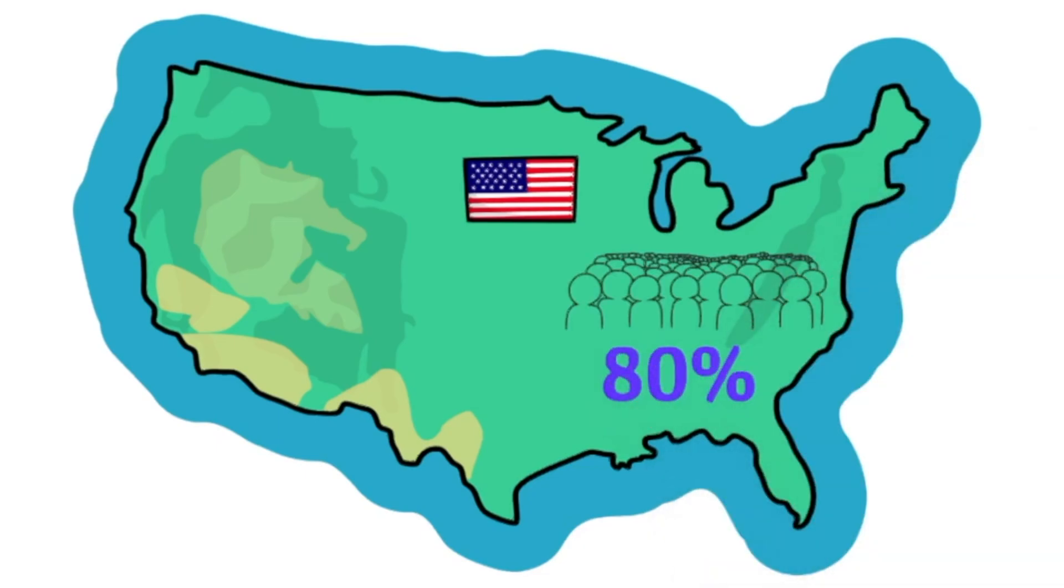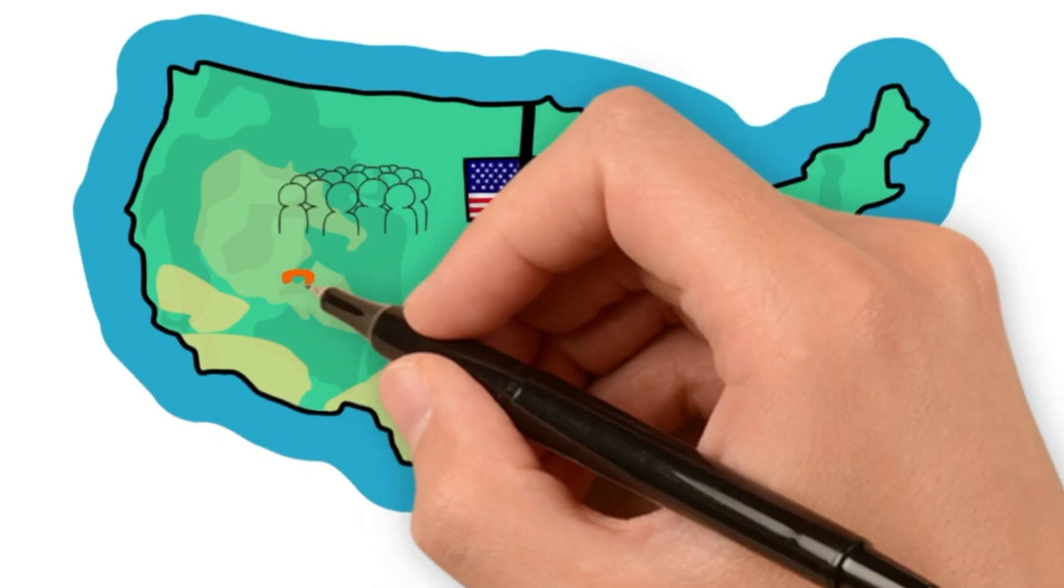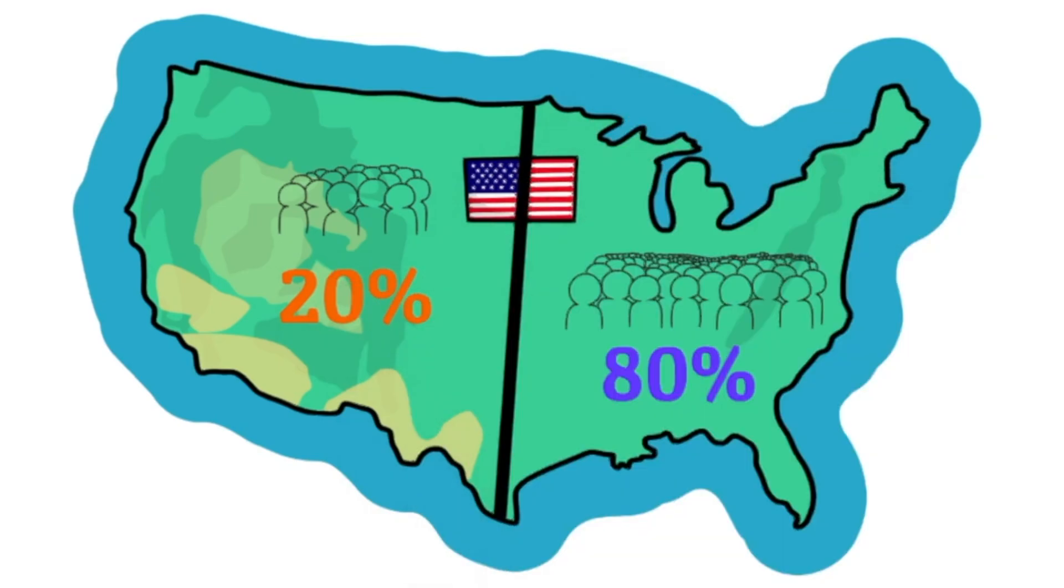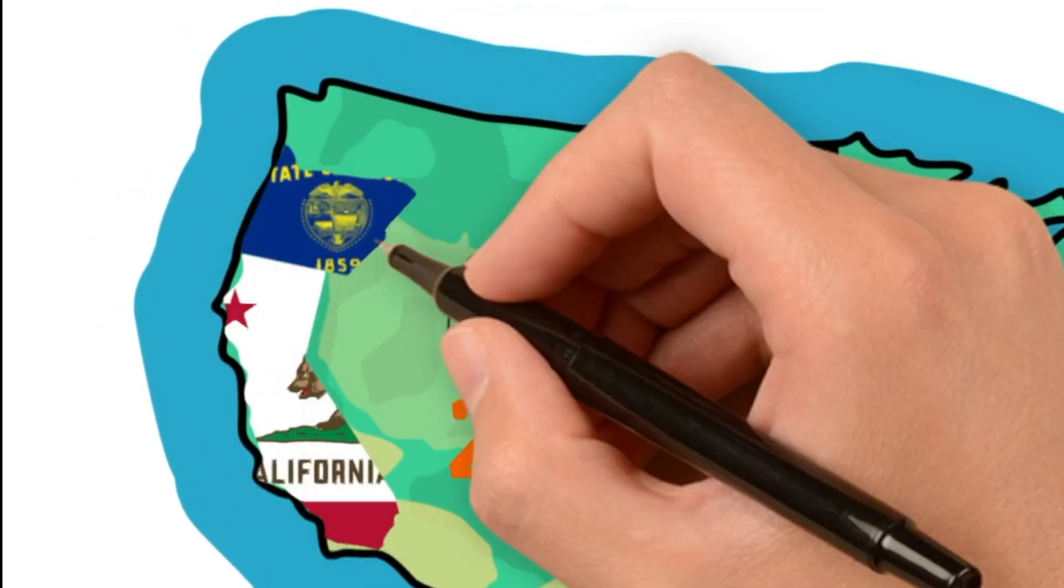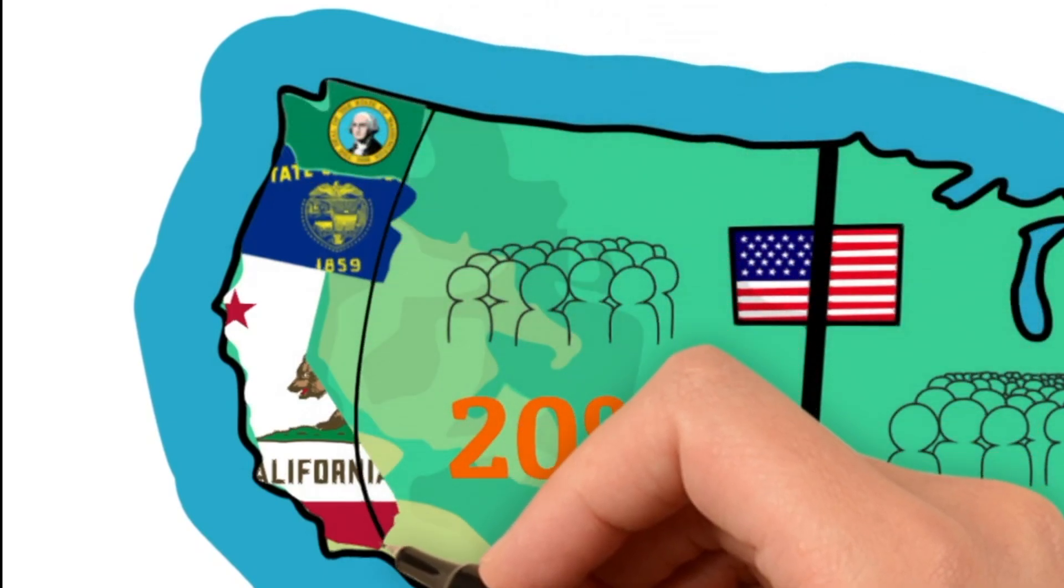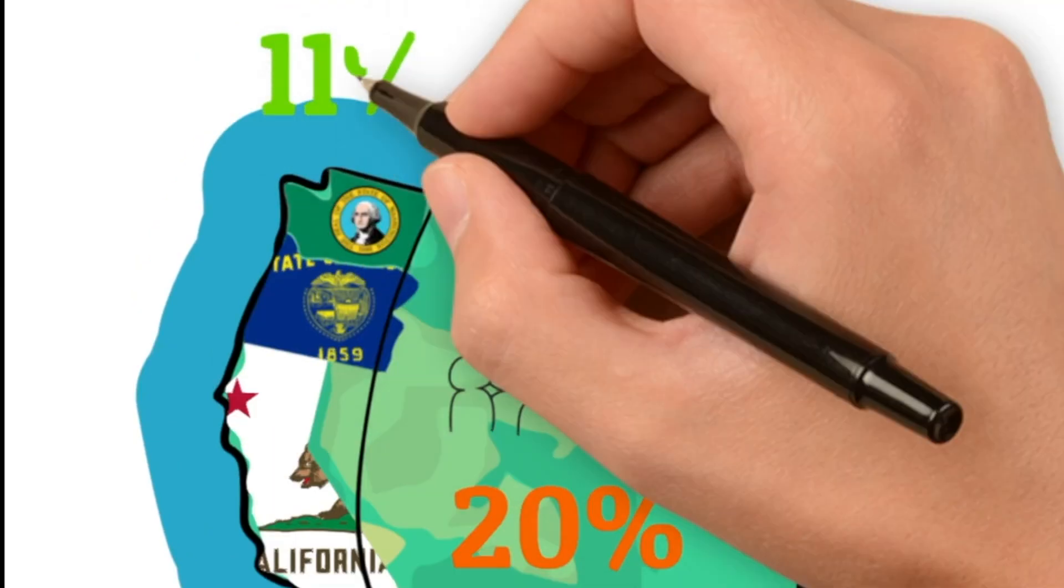Why do 80% of all Americans live east of this line, while only 20% occupy the western part of the United States? Even more, the majority in the West live in California, Oregon, and Washington within this line, accounting for 11% of all those living in the West.